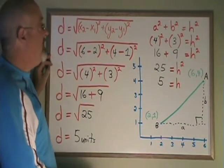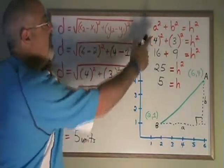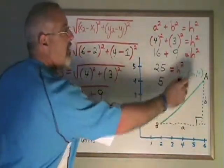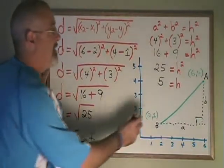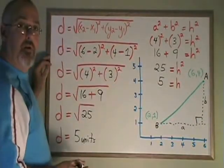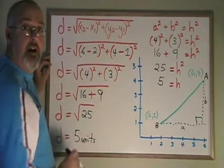So, we can see that the distance formula is a derivation of Pythagorean theorem. It really does the same thing that we would do if we used Pythagorean theorem with this imaginary triangle, and we can trust that the answer we're getting for the distance is accurate.